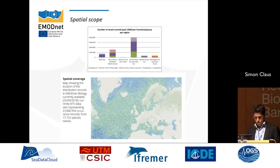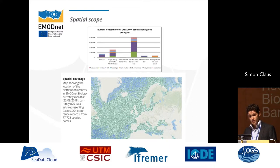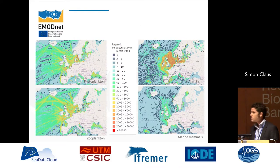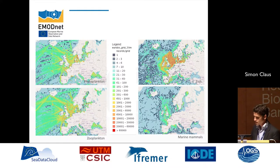The graph is more informative than a simple point map, showing that most data comes from the Greater North Sea and Northeast Atlantic. There are also aggregated graphs showing the number of records per grid cell for phytoplankton, zooplankton, fish, and marine mammals — the number of observations per 30-minute grid.